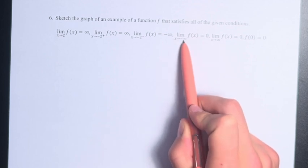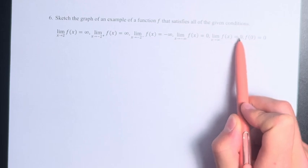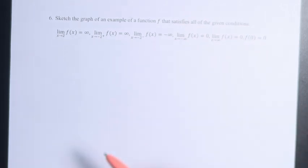The limit as x approaches negative infinity of f(x) equals 0, the limit as x approaches infinity of f(x) equals 0, and f(0) equals 0.